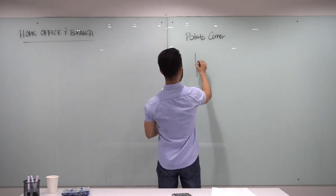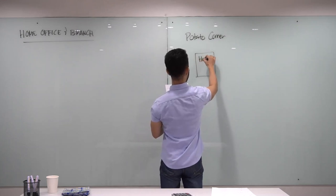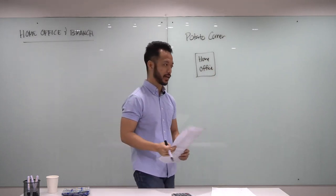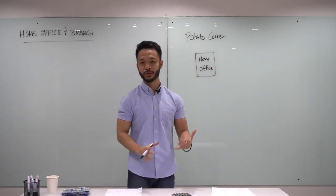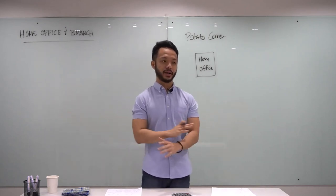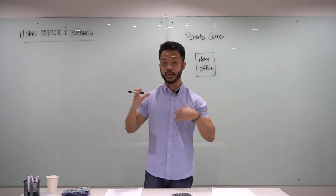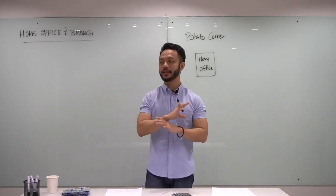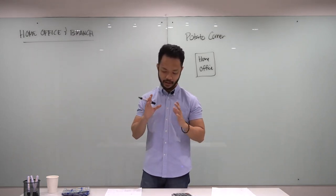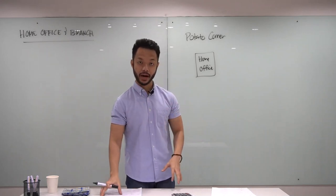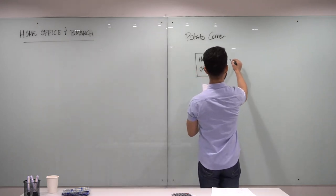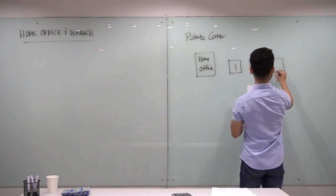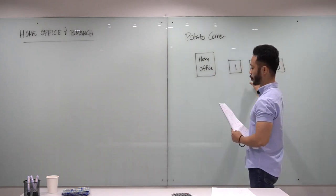Let's say this is the head office or home office of Potato Corner. When we say home office, that's the same as the head office or headquarters. Potato Corner, as we know, has many stalls and franchises all over the Philippines — and even abroad. But let's say they're just starting out, with no branches yet. Let's say they start with three branches: Branch 1, Branch 2, and Branch 3. So there's one head office and three branches.